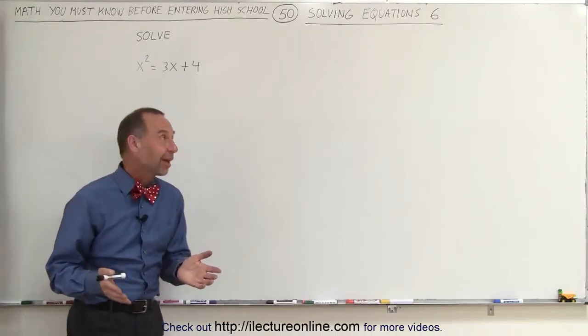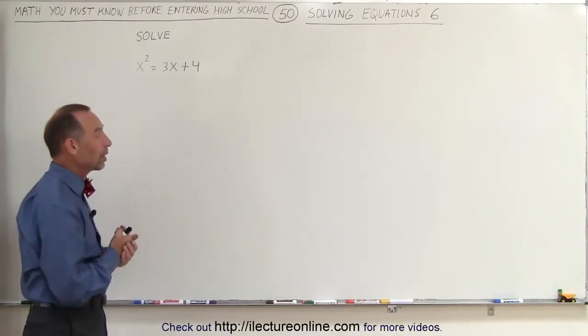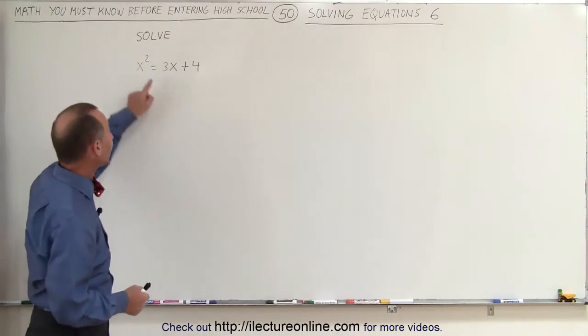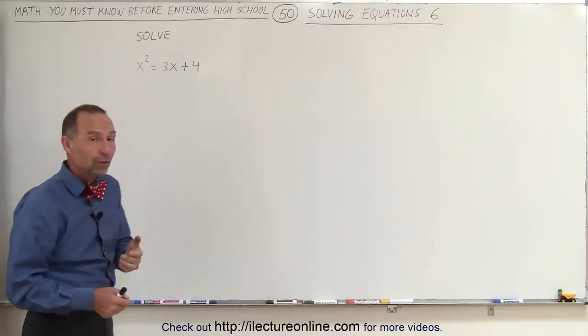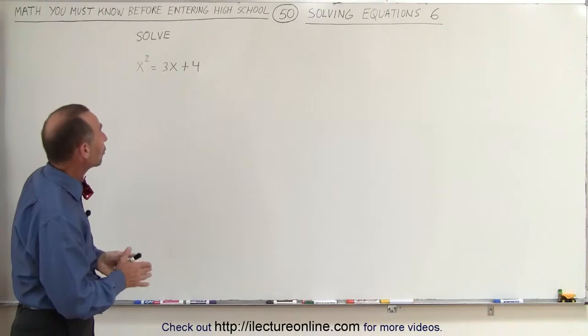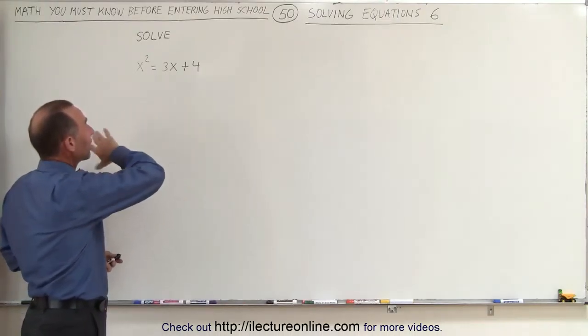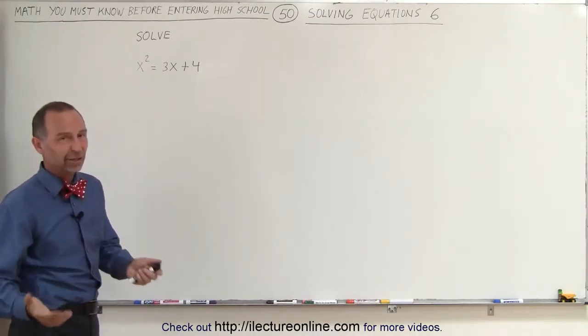Welcome to Electron Line. Our next example, again, is a quadratic equation. Notice that we have the x-squared term here, and with quadratic equations, what we like to do is move all the terms to the left side and a zero on the right side. So let's go ahead and do that.